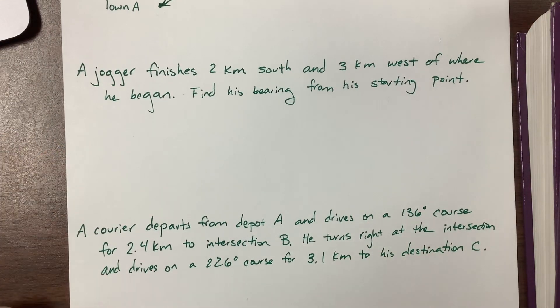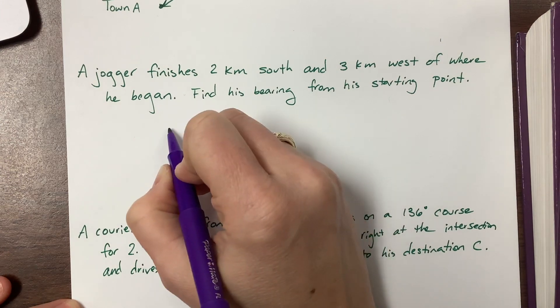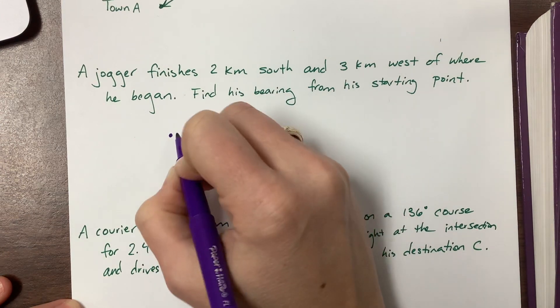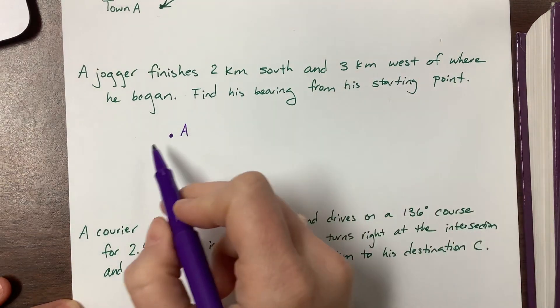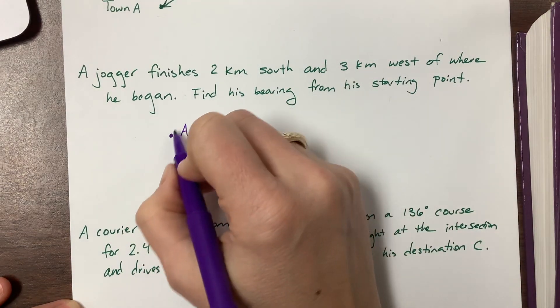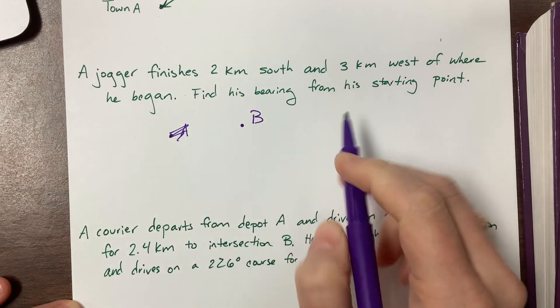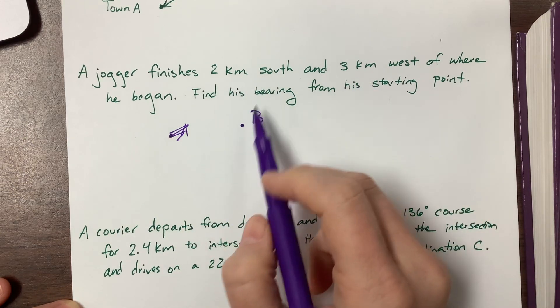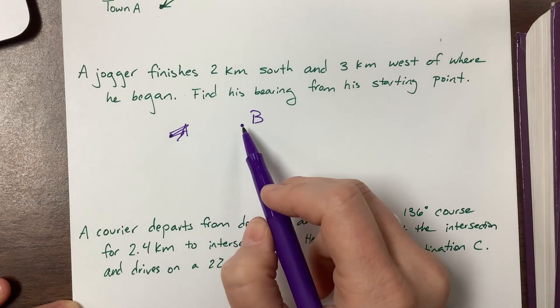They said a jogger finishes 2 km south and 3 km west of where he began. So that means he begins - let's say he begins at point B and he ends at the ending point. So it's two kilometers south, so we need to go south, and then three kilometers west is this way.